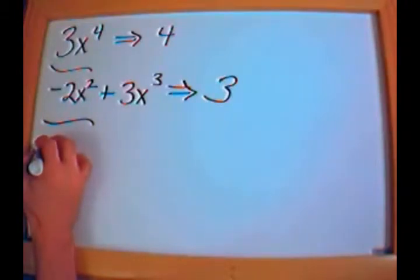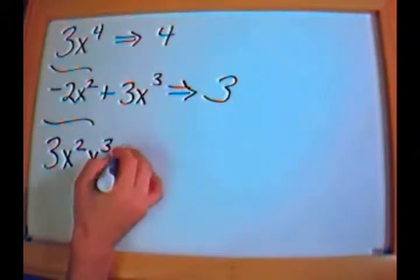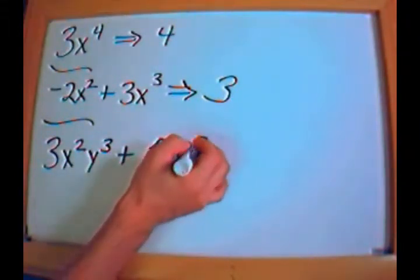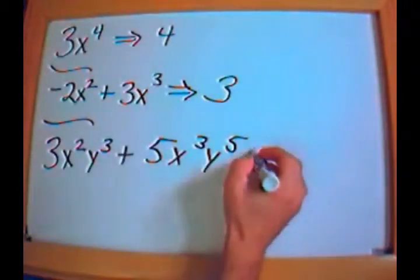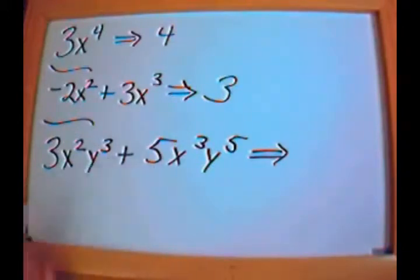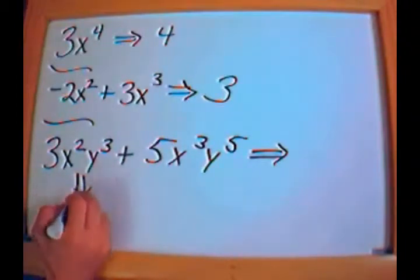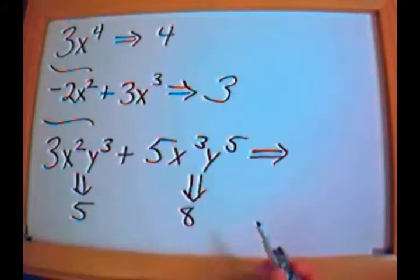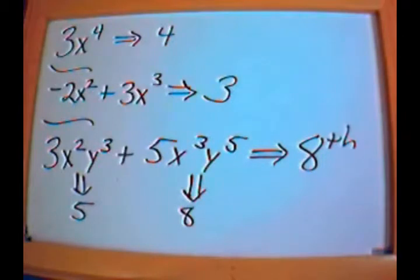Let's take a different looking example. What if you have something like 3x squared y to the 3rd plus 5x to the 3rd y to the 5th? What would be the degree? When you have a mixture of x and y, you add up the different exponents for each term. Here the sum of the exponents is 5, and here the sum is 8. You pick the bigger number, so this is an 8th degree polynomial.